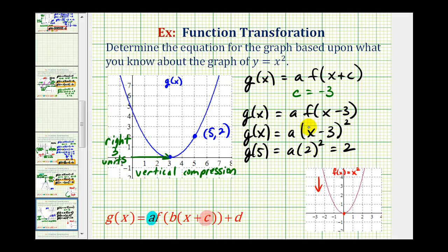Two squared is four, so that means four a equals two. Divide both sides by four. We have a equals one-half. Now we have all the information we need. If a is equal to one-half, we're just substitute one-half here for a, and we have our equation for g of x.